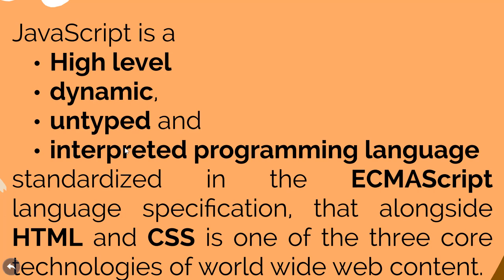The fourth is that it is interpreted. Interpreted languages are those languages for which most implementations execute instructions directly and freely without previously compiling a program into machine language. We have another category called compiled programming languages, for which we require compiling the whole program into machine language before execution. But with interpreted languages, we start with each statement and convert it to equivalent machine language and execute it, making it best suitable for web development.